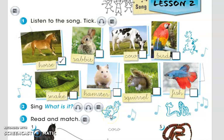Which animal is white? Very good! The hamster. It's a white hamster.